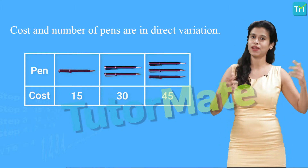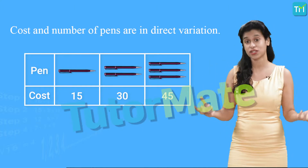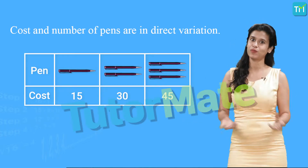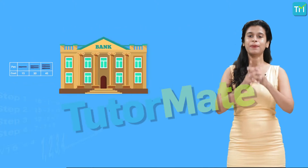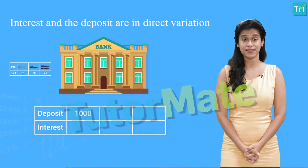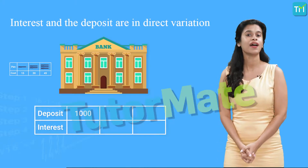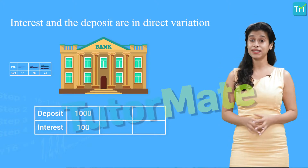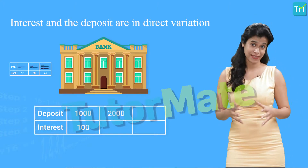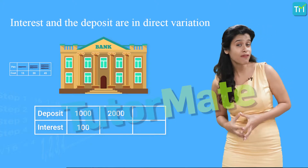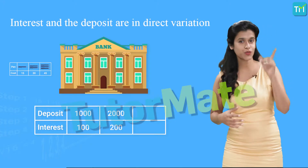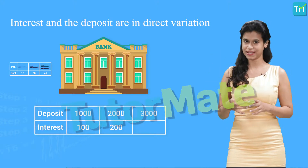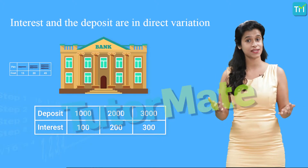You see, as the number of articles increases, even the total cost increases along with it. Let's look at one more example to prove it. In a bank, if we deposit 1000 rupees then the bank pays an interest of 100 rupees. If we deposit 2000 rupees then the bank pays an interest of 200 rupees. Similarly, on depositing 3000 rupees it pays 300 rupees as the interest.